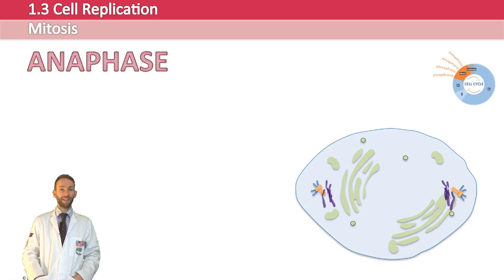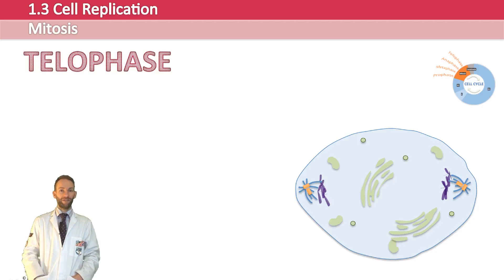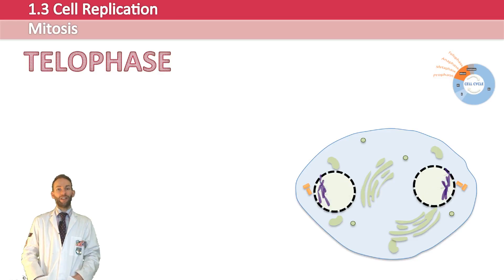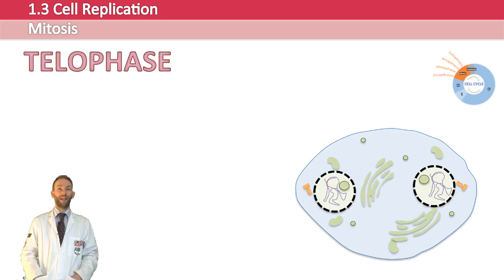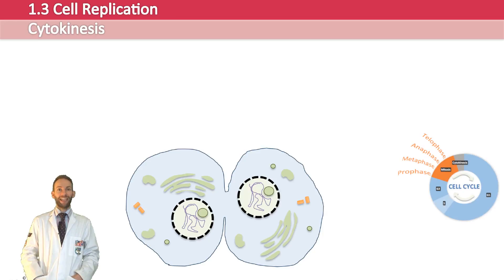Finally, in telophase, the spindle starts to break down as it's not needed anymore. The nuclear envelopes start to reform, the nucleoli reform, and the chromosomes become less dense again. We have now completed nuclear division — two nuclei with a complete set of DNA in each one — but the cytoplasm hasn't split yet. We need to move on to the final stage: cytokinesis.